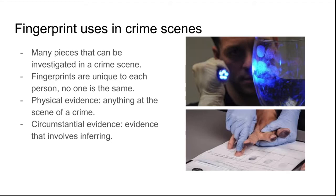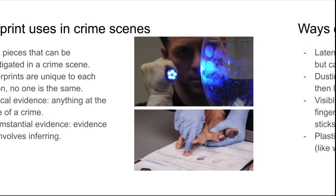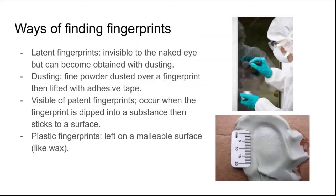The unique ridges of your fingerprint contain sweat glands that produce oils. When the finger touches a surface, the oils are transferred in the shape and pattern of the fingerprint, known as a latent fingerprint, which is invisible to the naked eye but can be obtained through dusting. Dusting is a process of dusting fine powders over the fingerprint, and once it adheres to it, you lift the fingerprint with transparent tape. You would use dark powder on light surfaces, and vice versa.